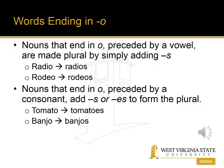Likewise, rodeo ends in O preceded by an E, so we form the plural by just adding an S. However, nouns that end in O preceded by a consonant form the plural by adding either S or E-S — and unfortunately that's something we need to learn. So tomato becomes tomatoes, but banjo becomes banjos.